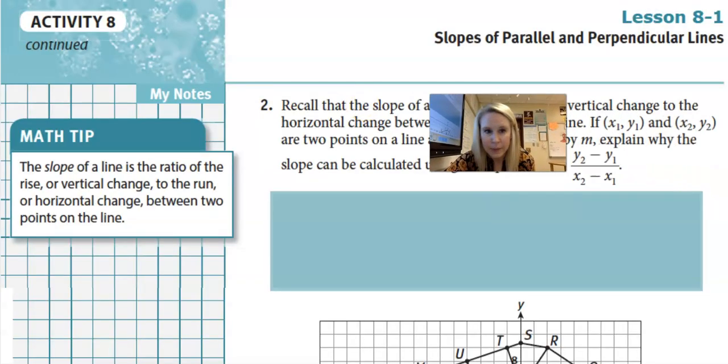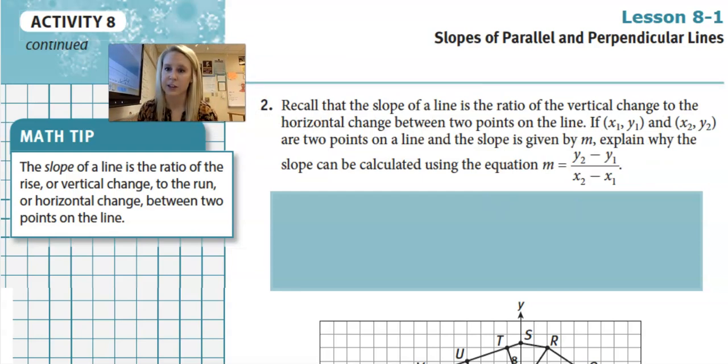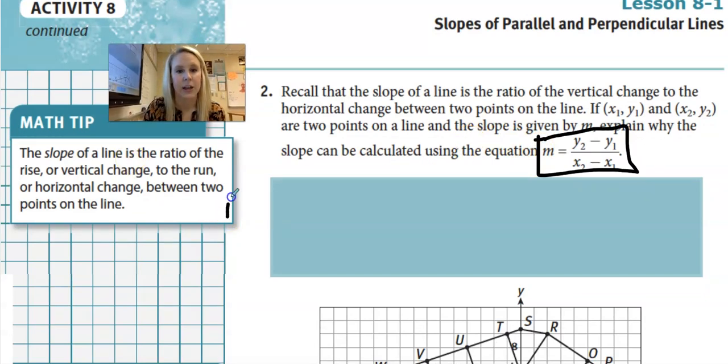We're still going to talk about slopes in skate parks. So recall that slope of a line is the ratio of the vertical change to the horizontal change between two points of a line. If you have points X sub 1 and Y sub 1 and X sub 2 and Y sub 2, they're the points in a line and the slope is given by M. Explain why the slope can be calculated by the equation M equals Y sub 2 minus Y sub 1 over X sub 2 minus X sub 1.